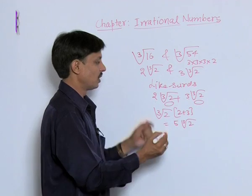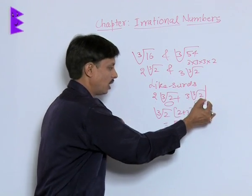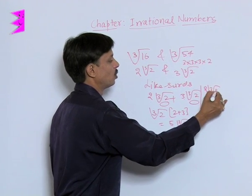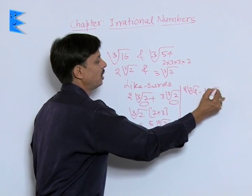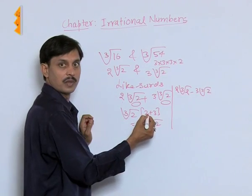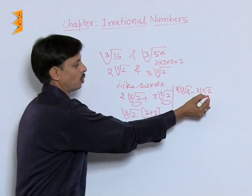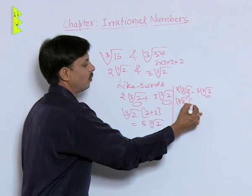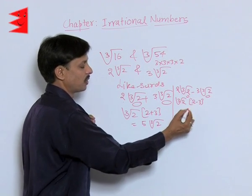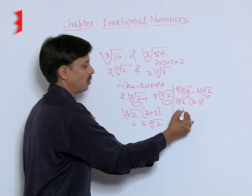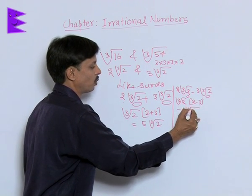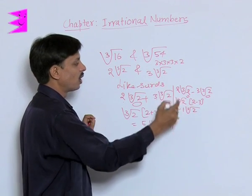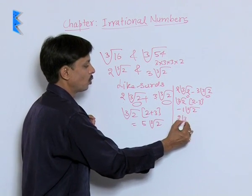Similarly, in subtraction: if you want to subtract 2∛2 − 3∛2, we take ∛2 as common and are left with 2 − 3, which is −1. So the answer becomes −1 × ∛2, or −∛2. That is the difference.